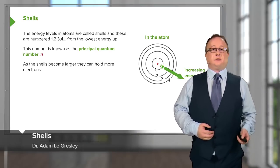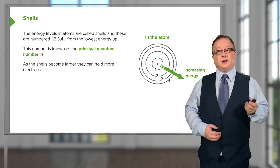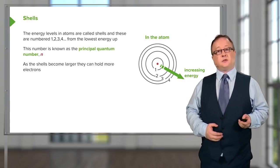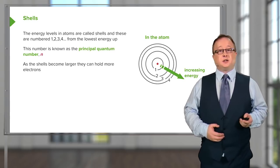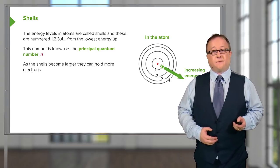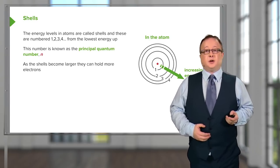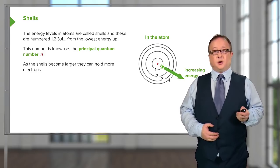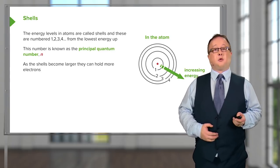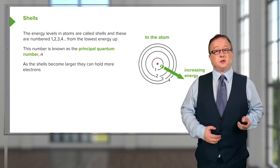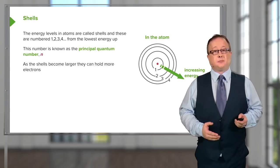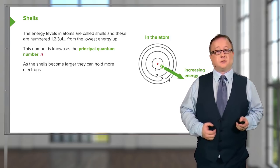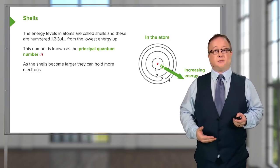These energy levels, as postulated by Niels Bohr, are called shells. Electrons exist at a number of different discrete distances from the central nucleus — the highest energies are further away. The principal quantum number is the actual lowest possible quantum value for that shell. The shell nearest the nucleus has quantum number one; moving one shell away gives quantum number two, then three, then four. As the shells become larger and move further from the nucleus, they hold more and more electrons. We'll be going through the makeup of these shells in the next lecture when we start looking at orbitals.